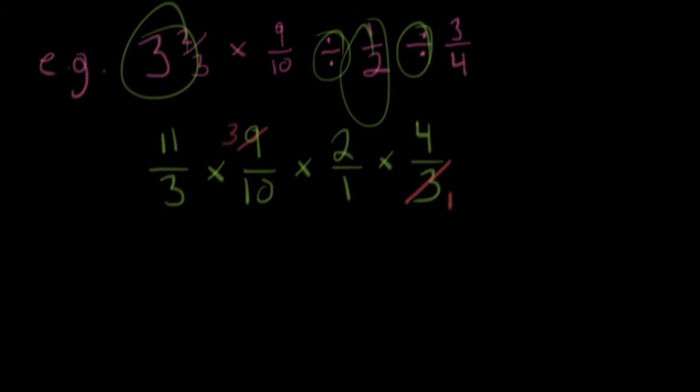I'm also going to cross reduce this four and this ten way over there. What? That's right. I'm going to divide it by two. And divide this by two and make it a five. Is there anything else we can do? Why, there sure is. How about the three and the three? So I can change this into a one and this into a one. Is there anything else that we could do? I don't think so. So what's my new equation look like? It looks like this. Eleven over one times one over five times two over one times another two over one.